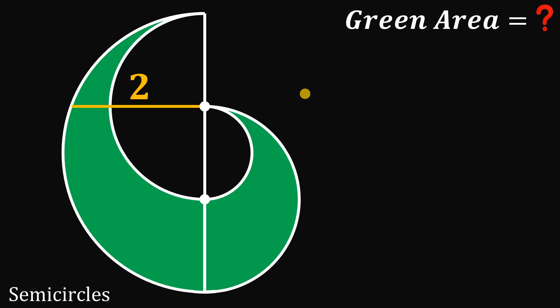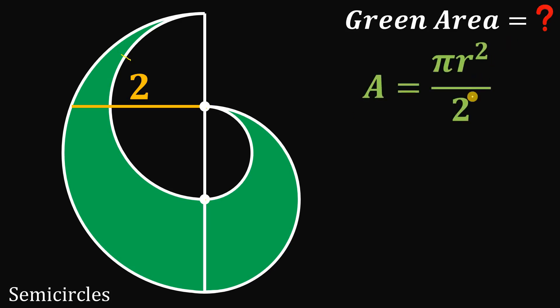Here's our solution for this question. This figure consists of semicircles, and to answer this question we will use the area of the semicircle, which is equivalent to π r squared divided by 2, or half the area of the circle.